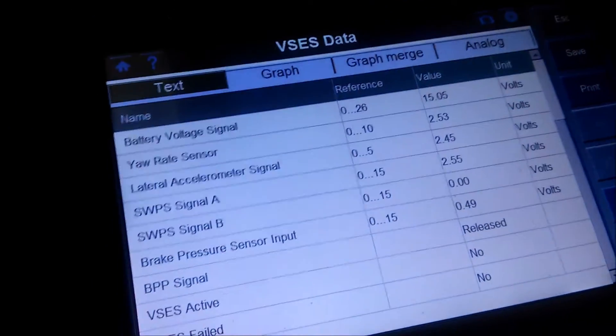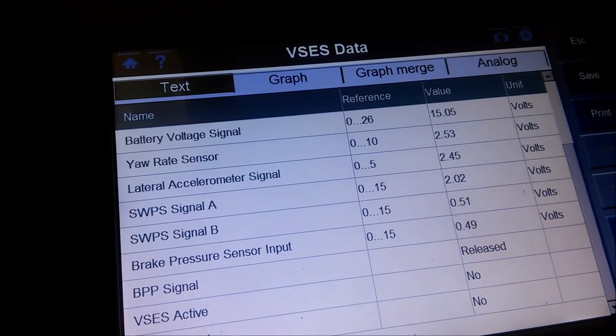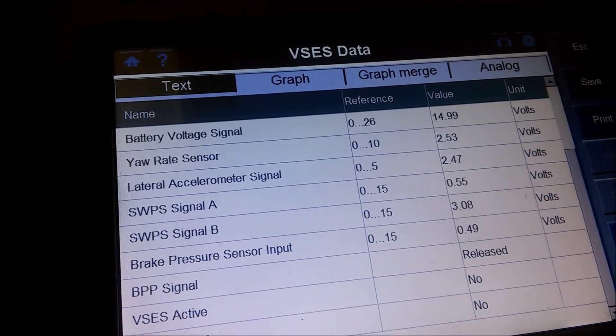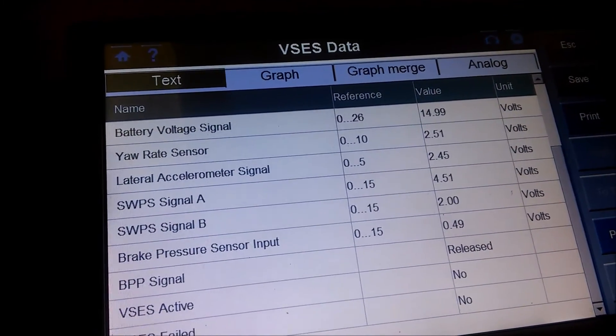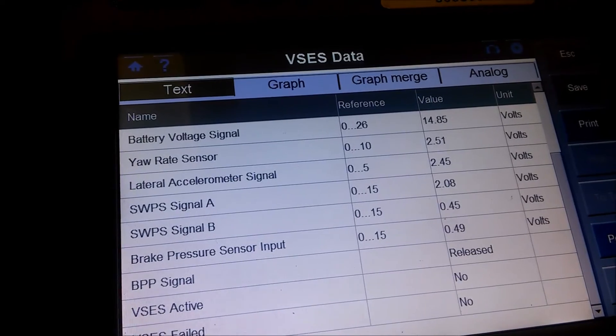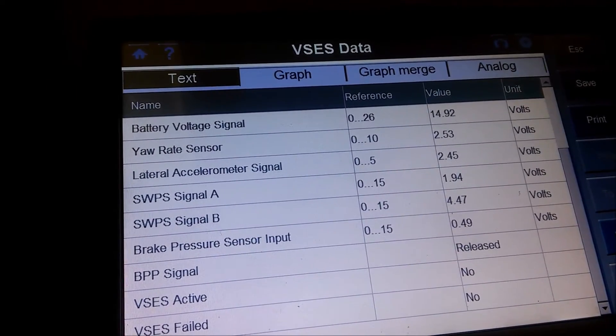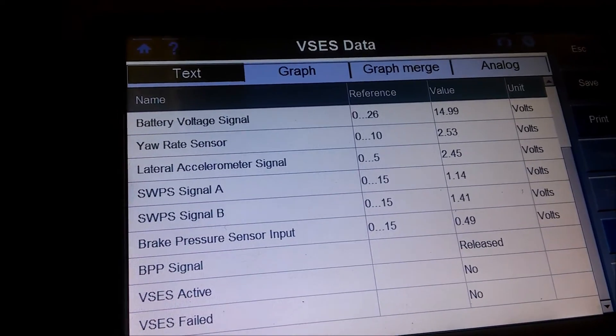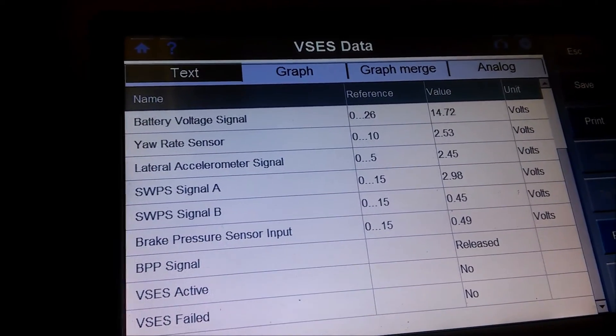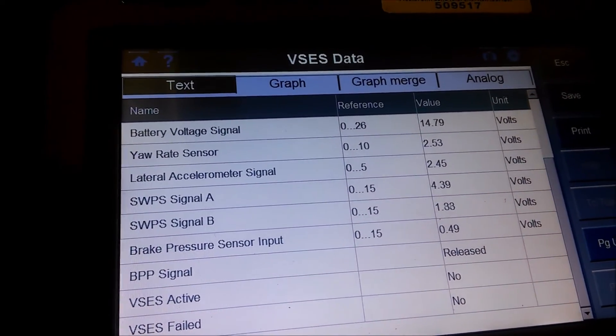The scan tool has two PIDs for the steering angle sensor. Unlike the sensors I showed earlier, this sensor has four wires. Two of the wires are signal A and signal B. As I turn the wheel, the voltages go up and down. This is showing an analog signal.